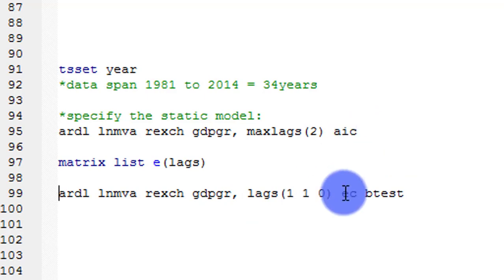The EC here is the error correction, while the bounds test, which is the purpose of this tutorial, is what I intend to obtain. So I highlight it, and I click on the run button.